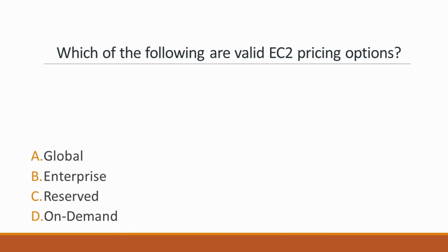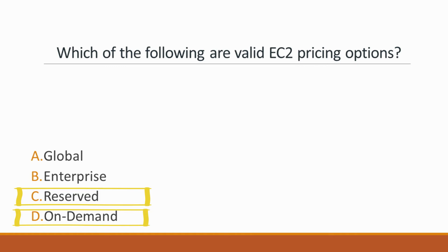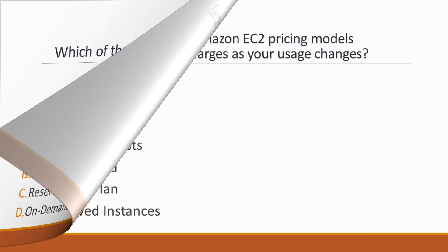Next question: Which of the following are valid EC2 pricing options? Options: A. Global, B. Enterprise, C. Reserved, D. On-demand. Correct answers are option C and option D, because on-demand — where you pay for resources used at the end of the billing period — and reserved — where you commit to paying a certain amount every billing period for a length of time — are the valid EC2 pricing options.